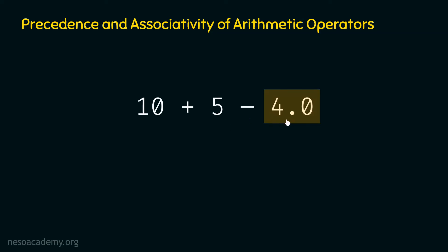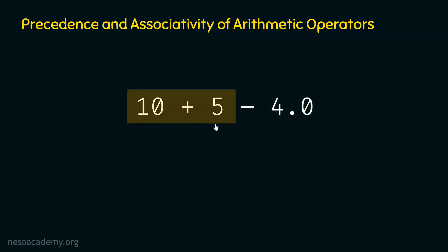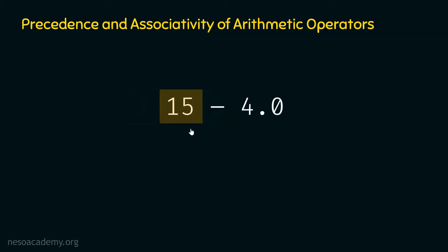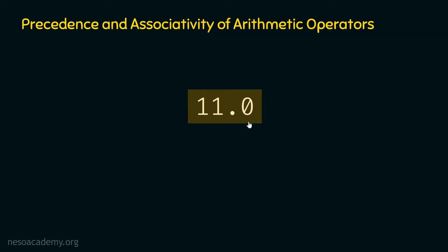Now we have 10 + 5 - 4.0. Here we have plus and minus, which have the same precedence, so associativity comes into picture. The order of evaluation is left to right, so we first evaluate 10 + 5, which gives 15. Then we evaluate 15 - 4.0, which gives 11.0. So the final result of the expression is 11.0.